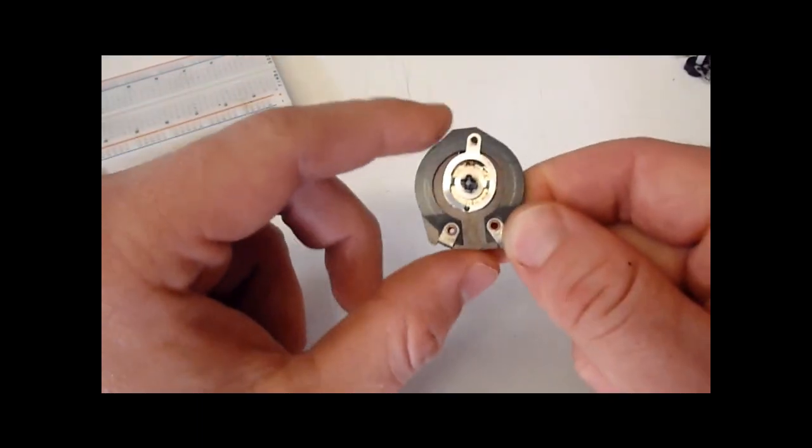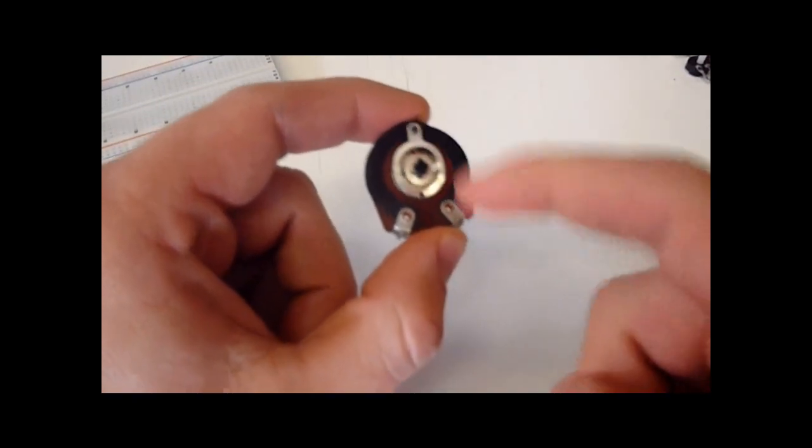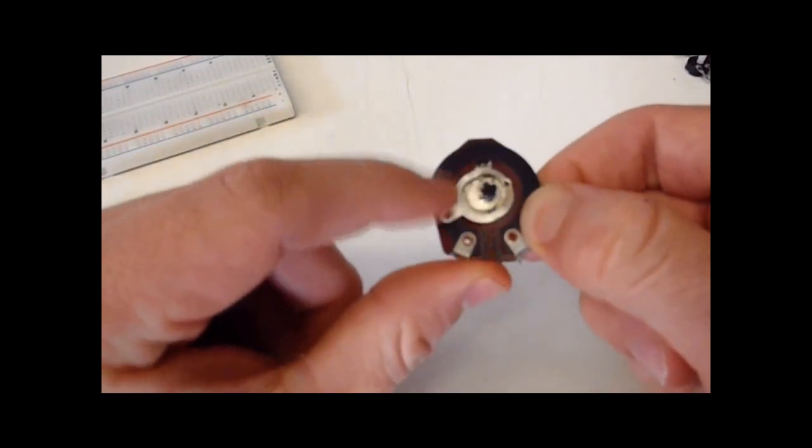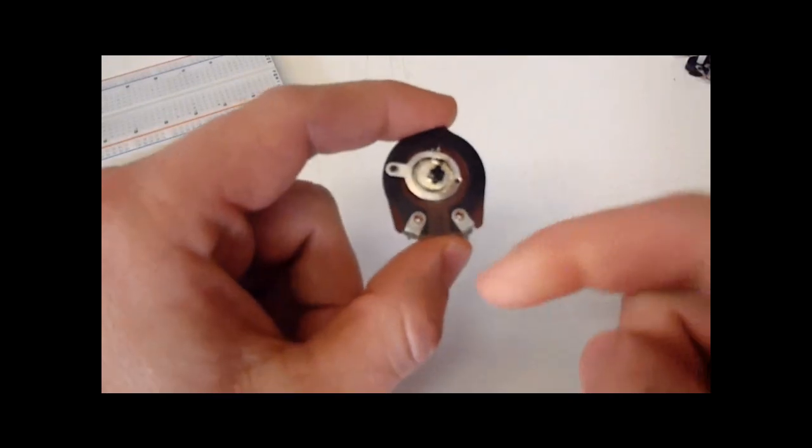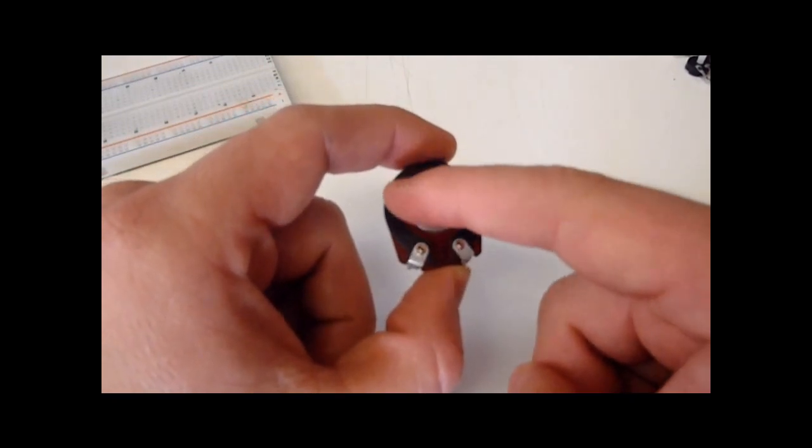And what that means is when the potentiometer is at the halfway point, from here to here is the same resistance from here to here. But now if you move to the quarter mark, the distance from here to here is 25% of the full volume. So it's only 25% of the resistance from here to here.